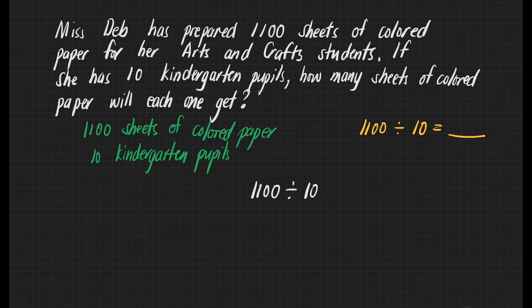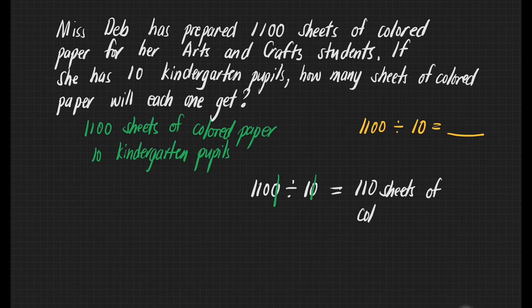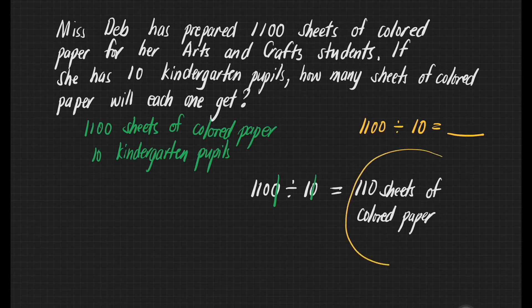Just like for example, we have here 1,100 divided by 10. How many zeros can you find in our divisor? That's 1, right? Then, we can cancel 1 zero from our dividend as well as 1 zero from our divisor. This will give us 110 divided by 1. So, the answer will be 110 sheets of colored paper. Therefore, each kindergarten pupil will get 110 sheets of colored paper.